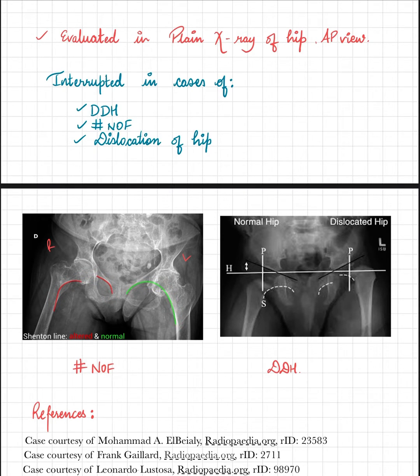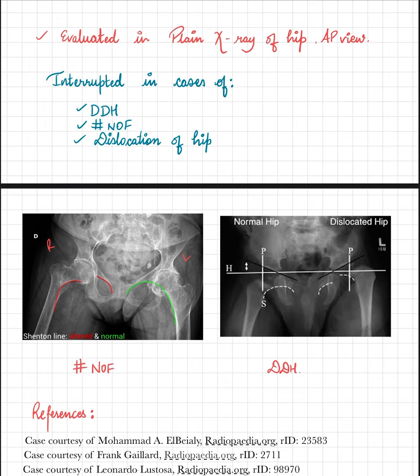Similarly, in this case of developmental dysplasia of the hip, the Shenton's line is normal and not broken on the right side, whereas it is broken on the left side.